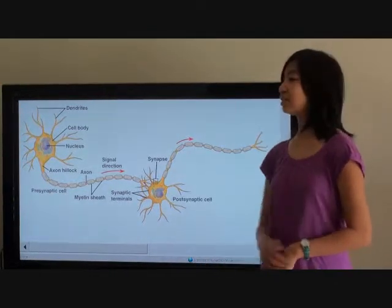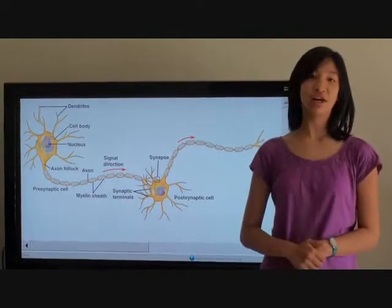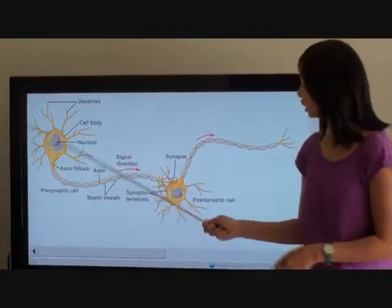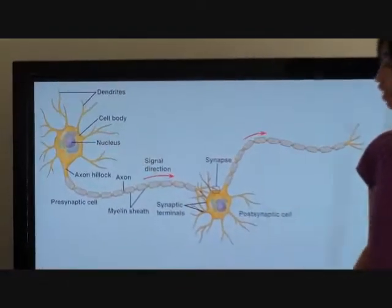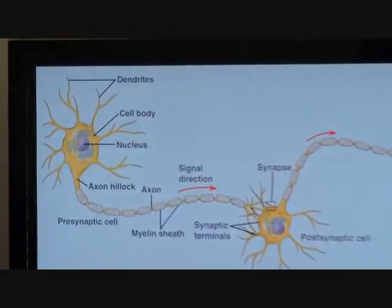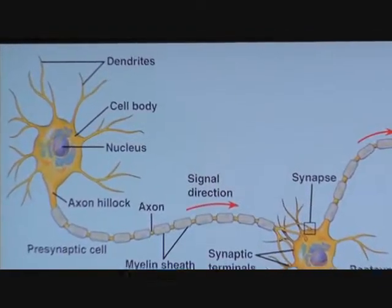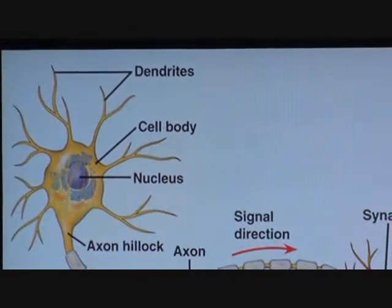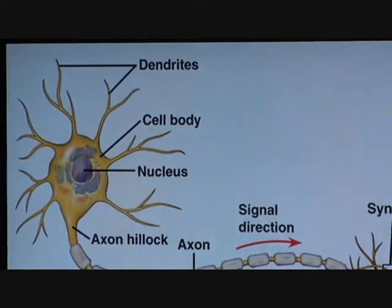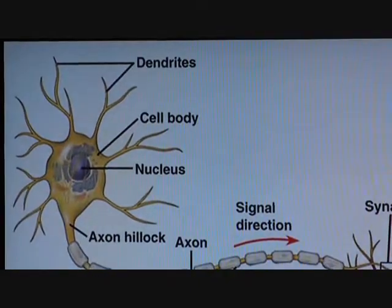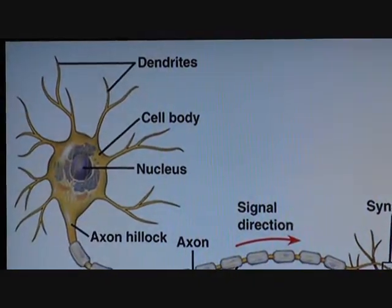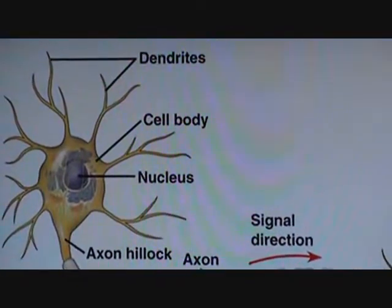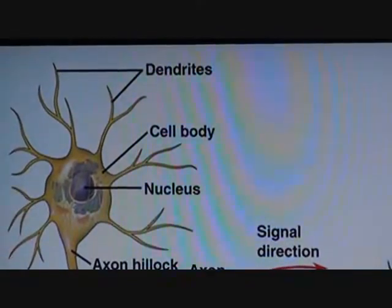This is the taxonomy of a neuron. These are the dendrites. The dendrites receive neurotransmitters from the previous neuron, thus creating an electrical signal to be passed to the next neuron.